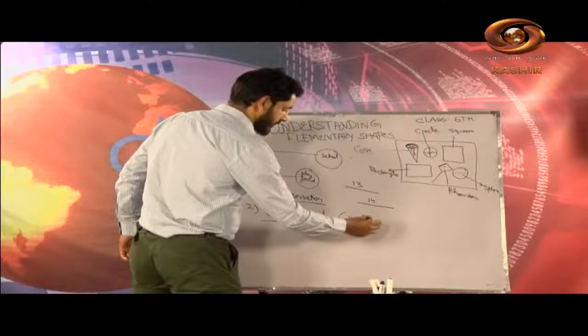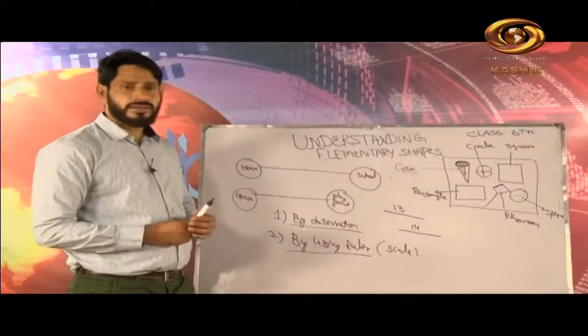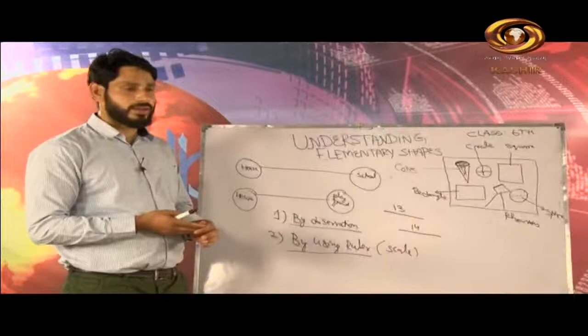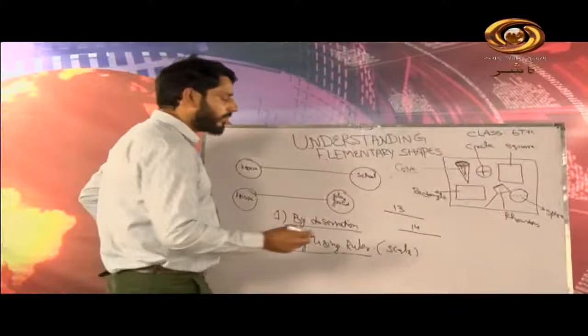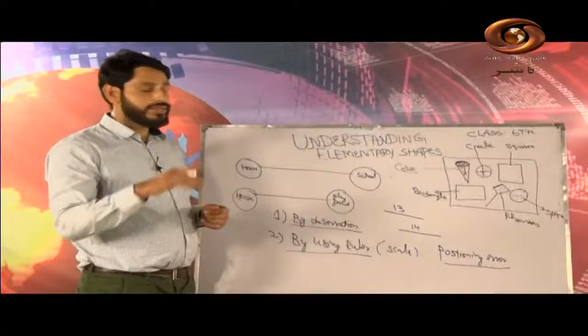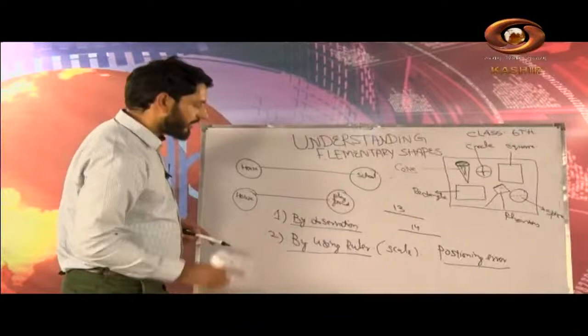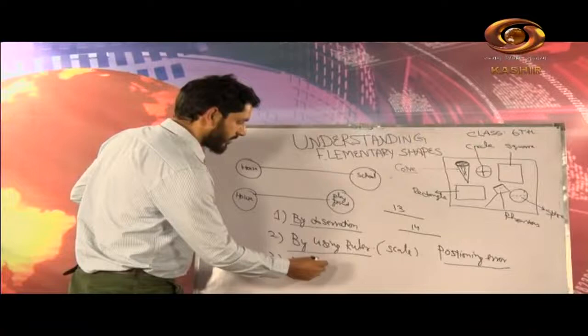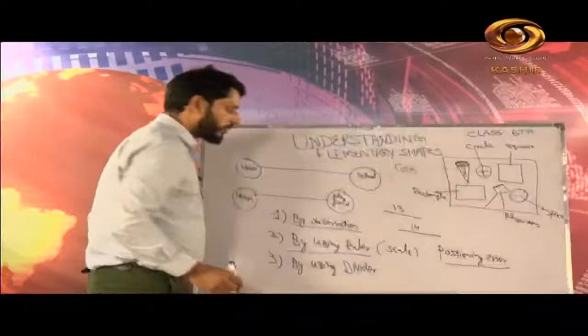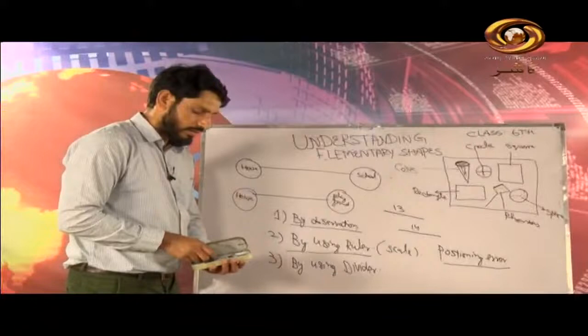So far, we have two methods. Now we will go for the third method. There is some problem with the ruler too — that is called a positioning error. What is this positioning error? Our eye must be vertically over the scale; otherwise, we may calculate results wrongly. So, the third method is by using a divider. This is our divider, and we will be using it to compare the lengths of two lines. Keeping one end fixed and extending it to the other side, I can see what length it fixes to.